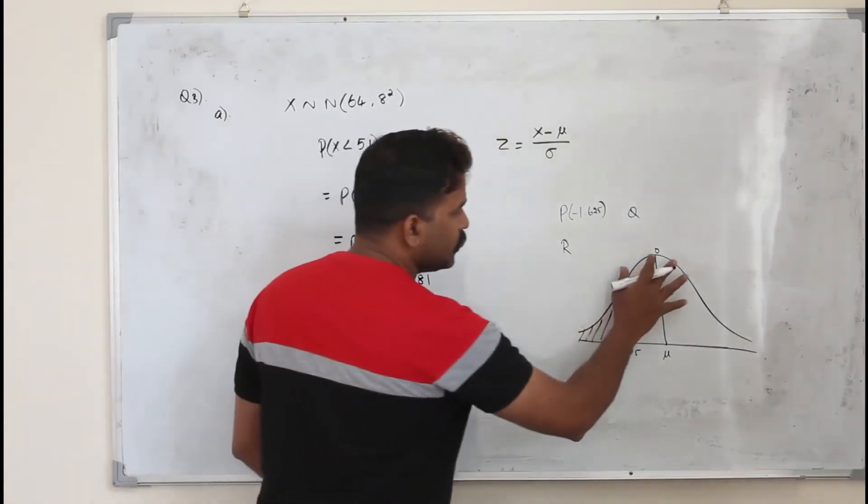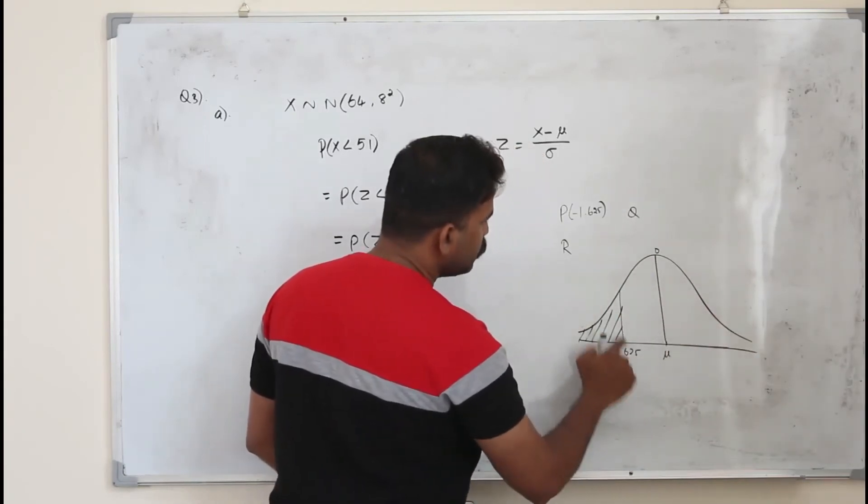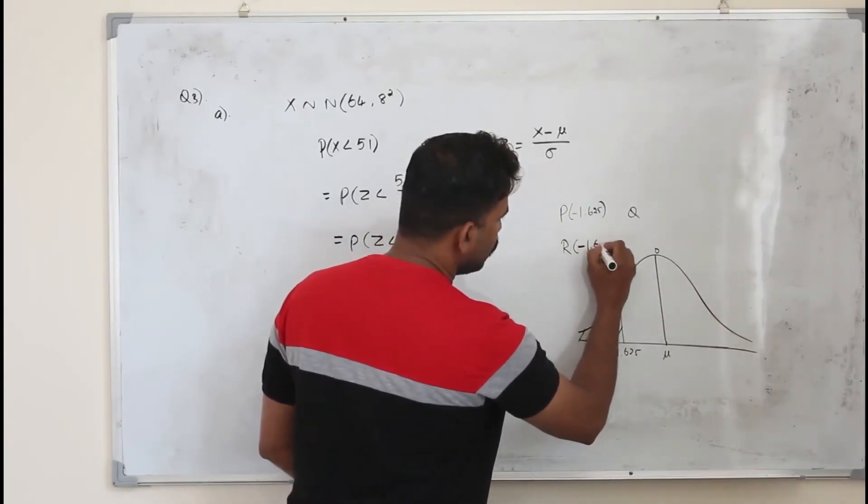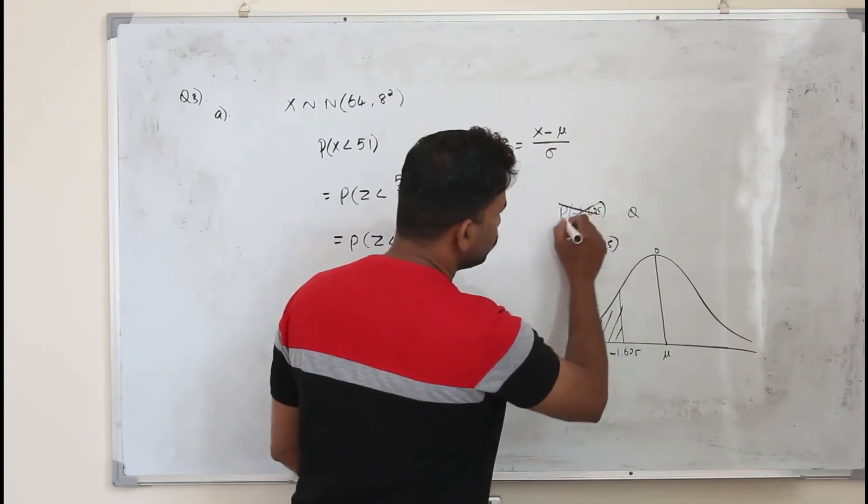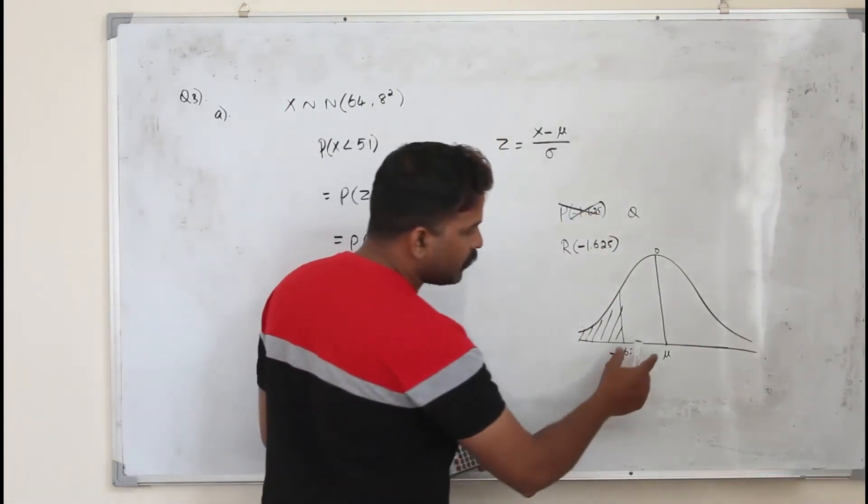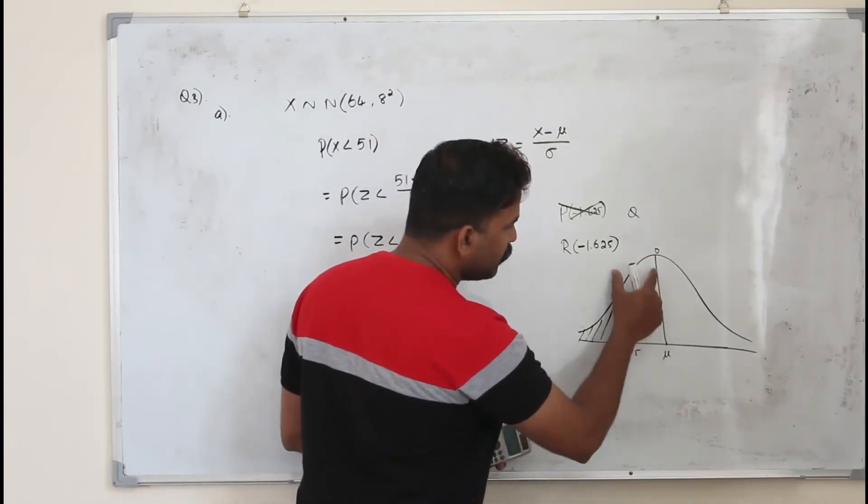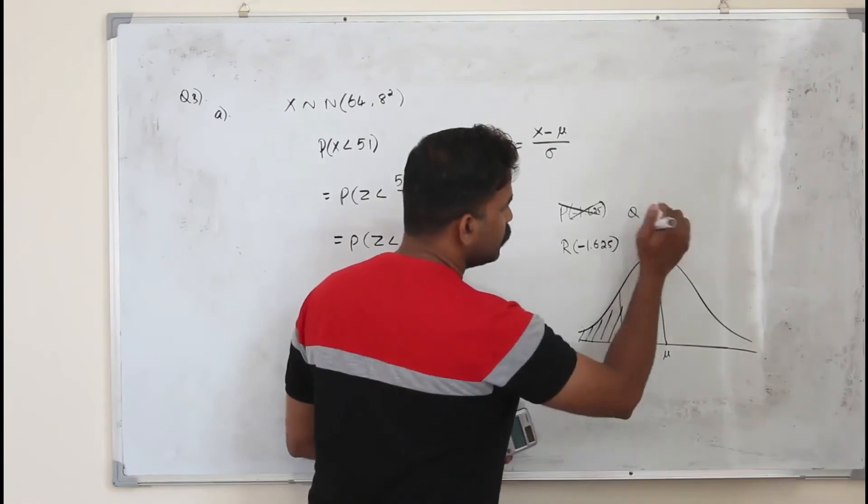Let's say they want you to find this value, the right side one. You put this value in here, R instead of P. Let's say for example you need to find the value between, the area between this value and the mean, then you use Q.